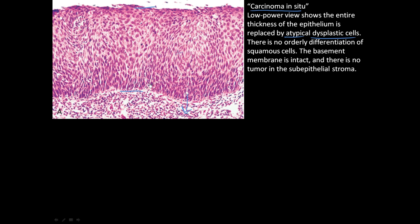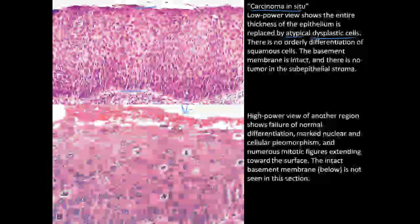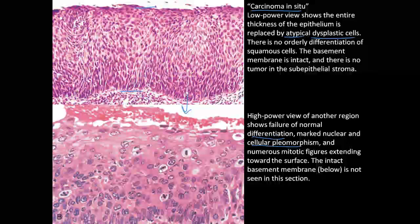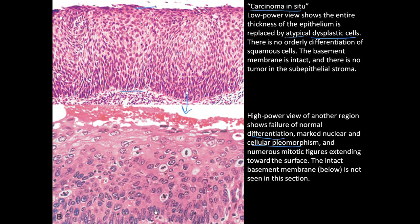A malignant carcinoma or malignant tumor would invade downward into this area, but here the basement membrane is still intact and there is no tumor in the subepithelial stroma. In the high power view of another region, there is failure of normal differentiation — these cells don't look like normal squamous epithelium. There is cellular polymorphism — differences in size and shape — and numerous mitotic figures extending towards the surface.